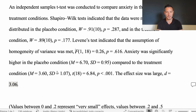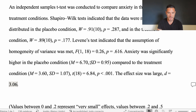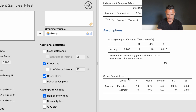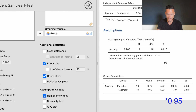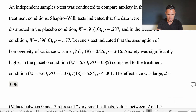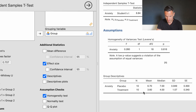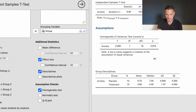Now let's report the actual t-test results. I've stated that anxiety was significantly higher in the placebo condition compared to the treatment condition, and reported descriptive statistics alongside. For the placebo condition the mean was 6.70 and the standard deviation was 0.95, and for the treatment condition the mean was 3.60 and the standard deviation was 1.07 — all taken directly from the group statistics table in the output.